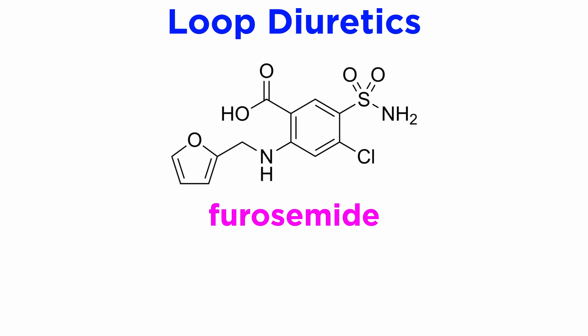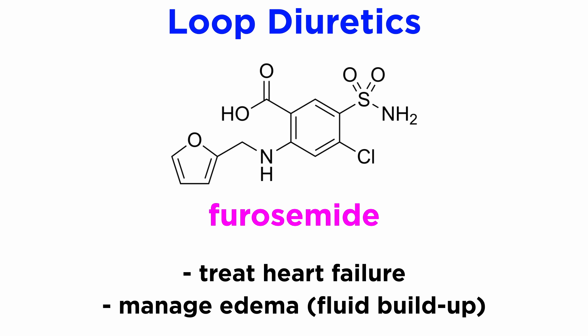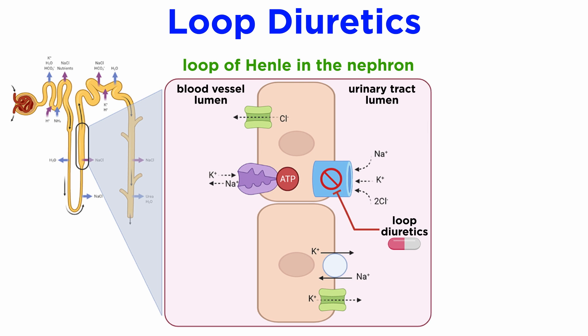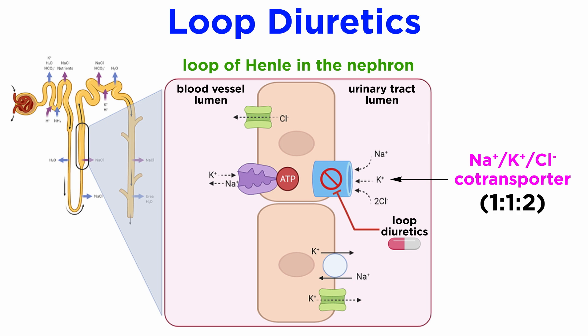Loop diuretics such as furosemide are incredibly powerful diuretic drugs that are more often used for heart failure and managing edema, or a buildup of fluid in the body, than they are for reducing chronic high blood pressure. As the name suggests, they act on the loop of Henle in the nephron. Loop diuretics inhibit a different ion symporter on the ascending loop called the sodium-potassium chloride cotransporter, which moves ions in an electroneutral stoichiometry of 1 to 1 to 2.